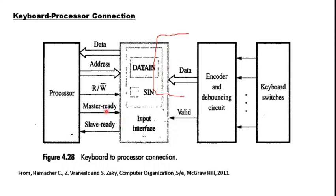The processor can either read the contents from the keyboard or issue a write operation, though write usually won't happen. The processor has a facility to supply an address and has separate lines to accept data from the input interface. This is the general structure of a keyboard getting connected to the processor.